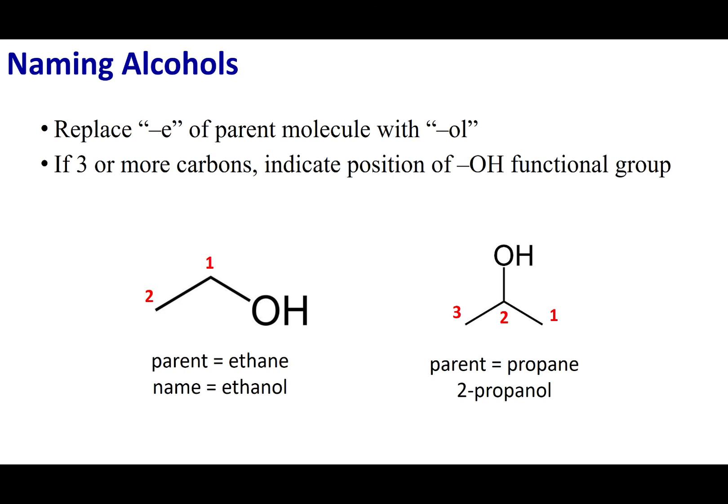Because the functional group is the most important part of the molecule, we name the molecule based on it. We find the longest chain of carbons that contains the functional group, drop the E off the parent alkane name, and replace it with OL to indicate an alcohol. So a two-carbon chain with an alcohol would be ethane minus the E, giving us ethanol.